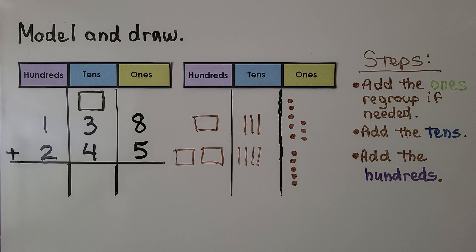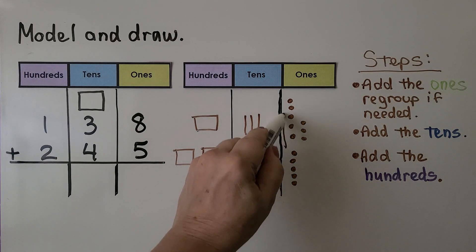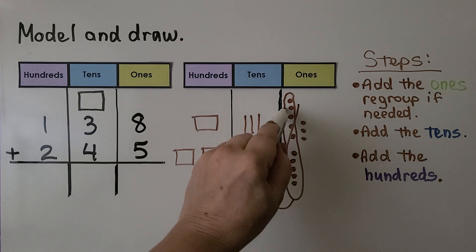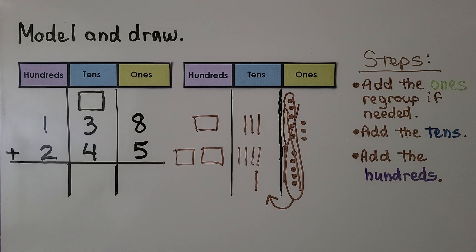We regroup if we need to. So we can circle these ten, the five and the five. And we can bring it over here and draw another ten. Then we cross these ten out because now we've used them. We have three ones.